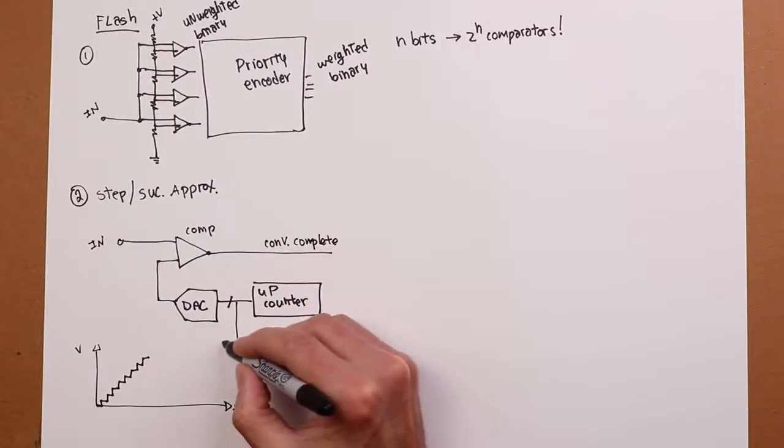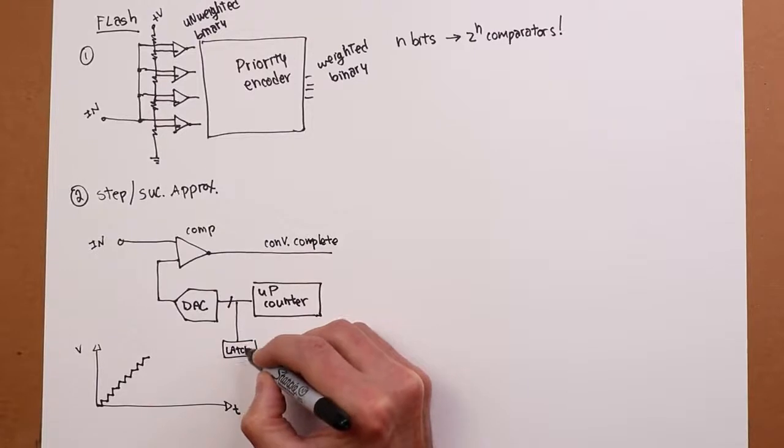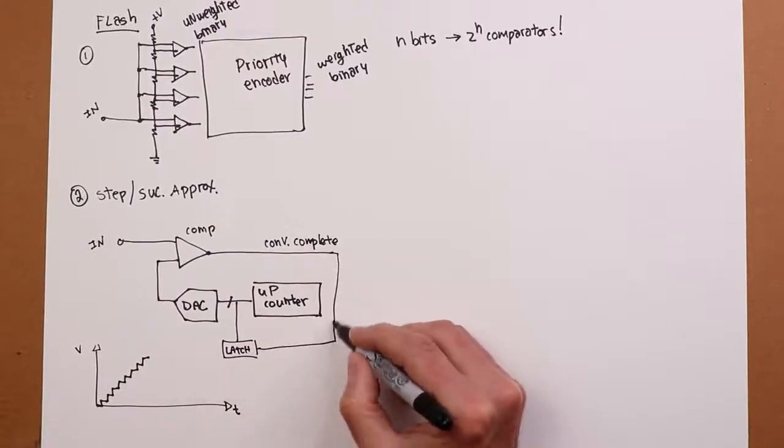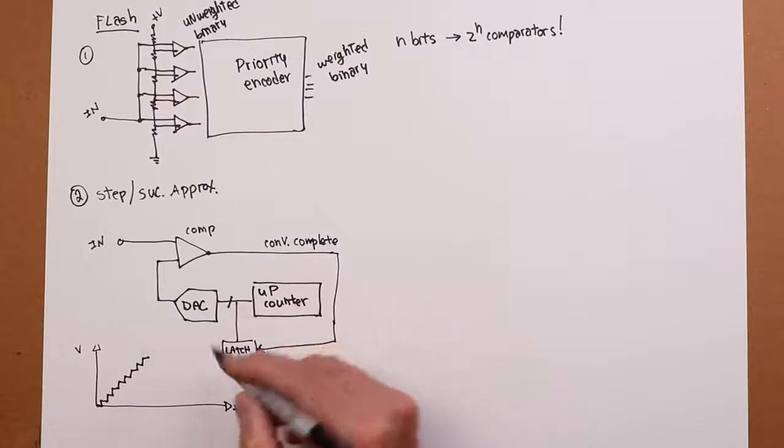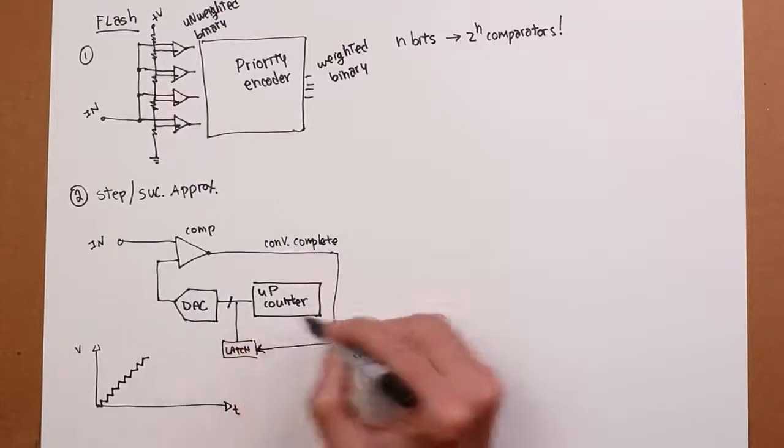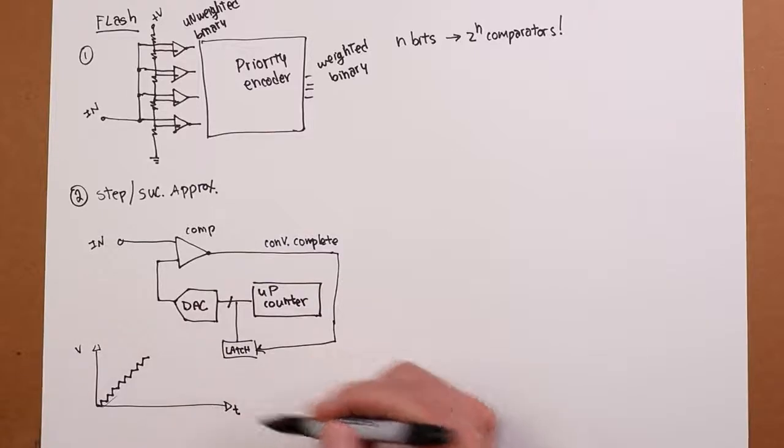And essentially, this right here is your conversion complete logic. And you can tap off here, have a little latch. And the conversion complete basically just says, okay, we've got our signal. We're good to go. Once this thing gets up to its final value of all ones, it just flips back around to 0 and counts up again.